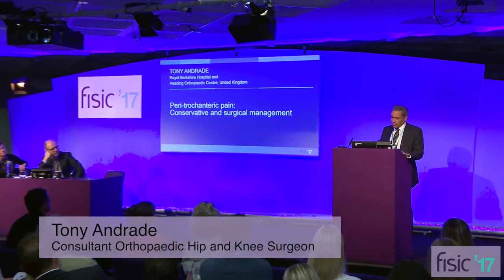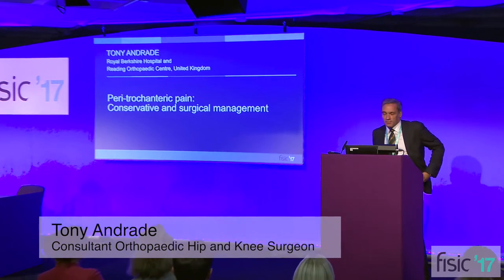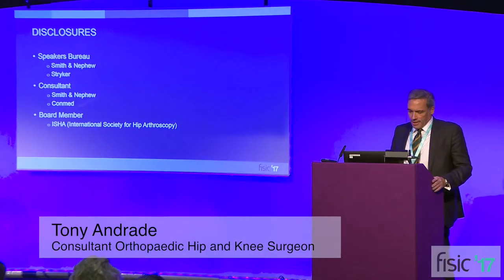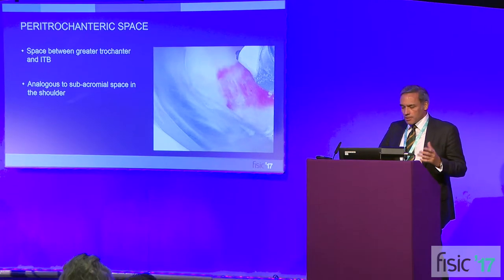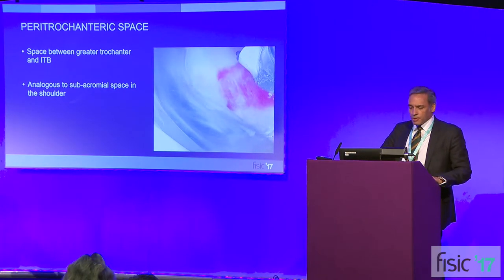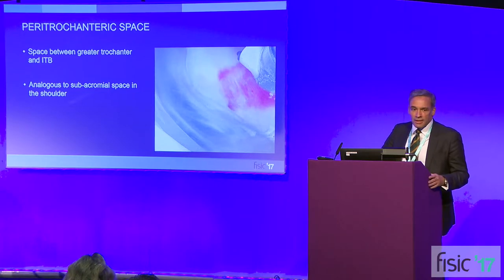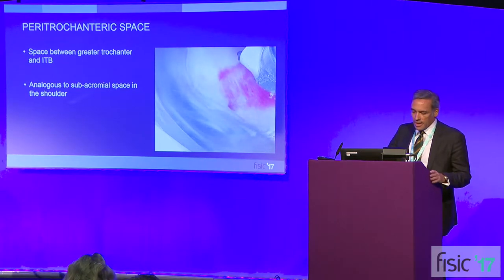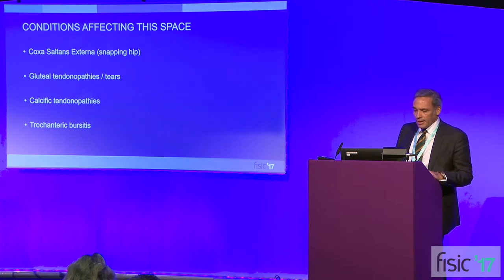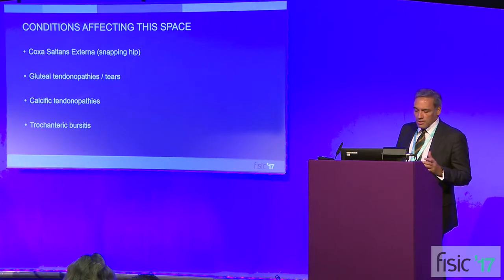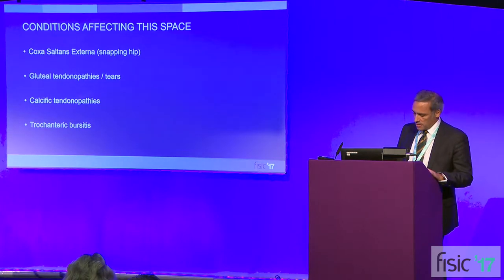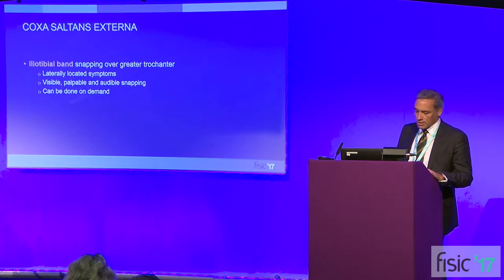Good morning everybody, and thank you for the invitation to come and share some thoughts with you. The peritrochanteric space is a space between the greater trochanter and the iliotibial band, and it's analogous to the subacromial space in the shoulder. There are several conditions that affect this space, and the ones I really want to touch on today are the snapping hip, the gluteal tears, calcific tendinopathies, and also trochanteric bursitis.